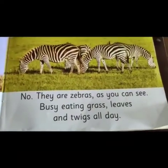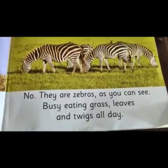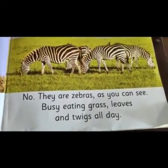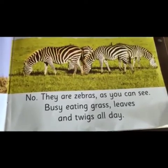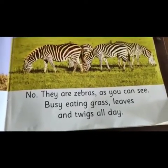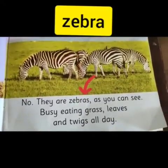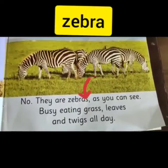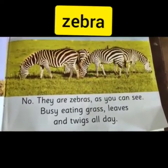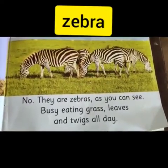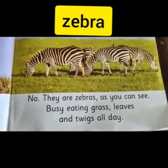Our next word is 'zebra'. Look for that word. Yes, it is here. And what sentence can we make with the word zebra? Zebras have black and white stripes.